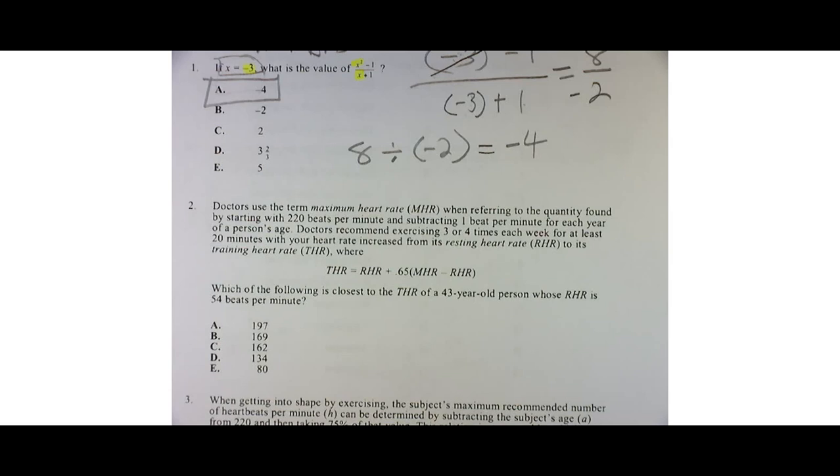Doctors recommend exercising three to four times a week for at least 20 minutes with your heart rate increased from its resting heart rate to the heart rate THR or training heart rate. And then there's a corresponding formula: THR, your training heart rate, is equal to or should be equal to your resting heart rate plus 0.65 times your maximum heart rate minus your resting heart rate.